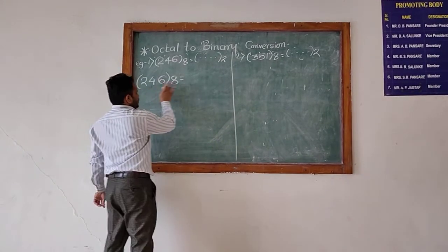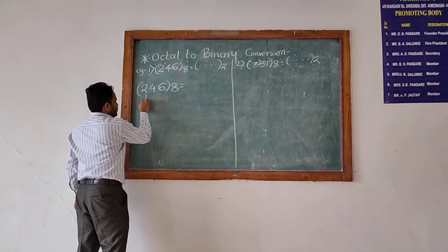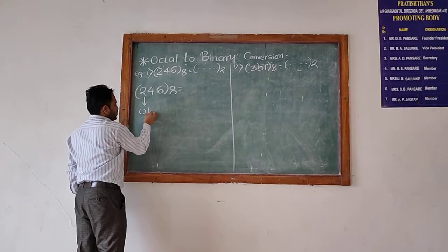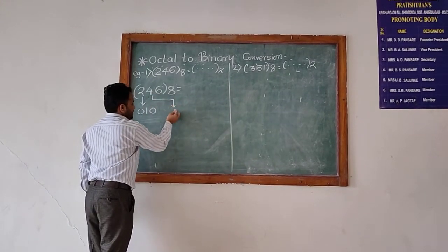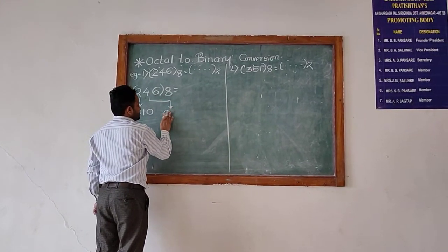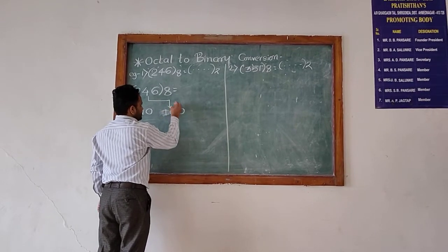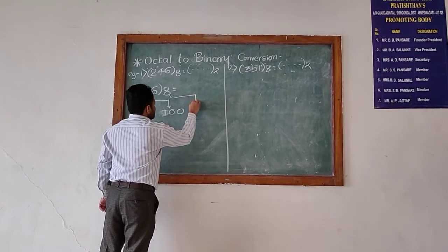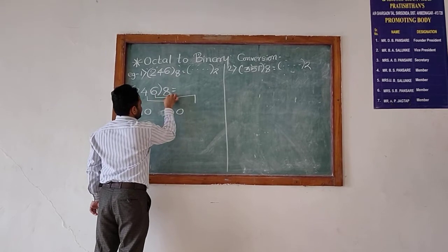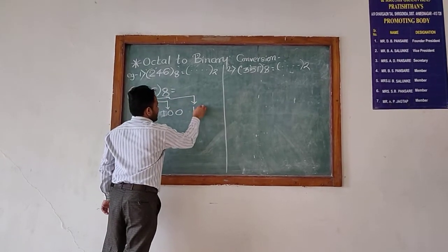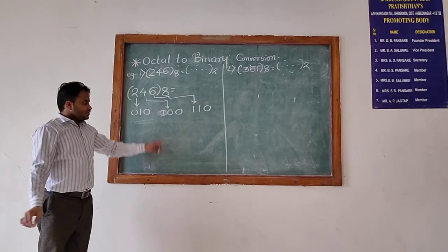So for 2, we know that it is 010. For 4, it is 100. And for 6, it is 110. So this is nothing but the binary equivalent of this number.